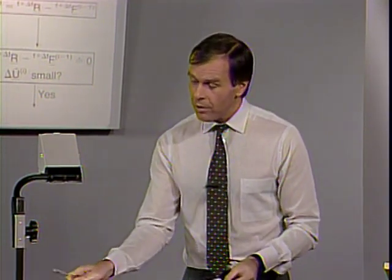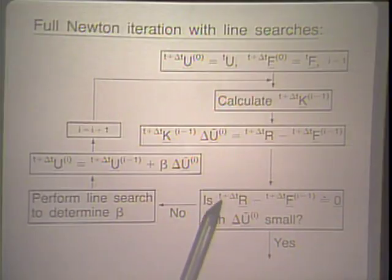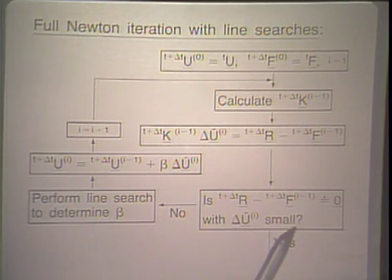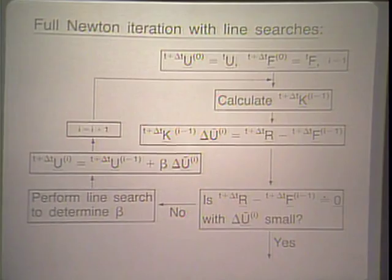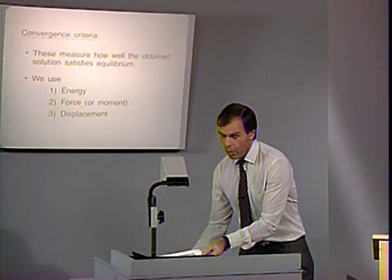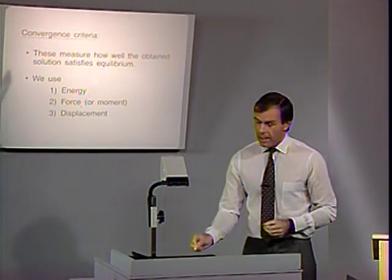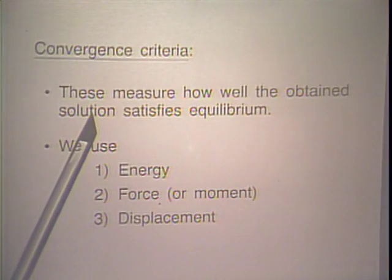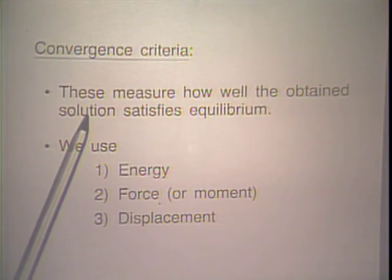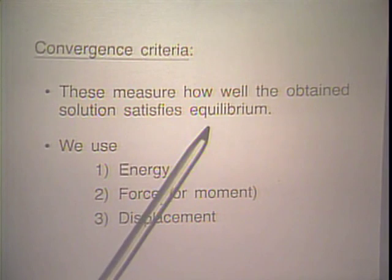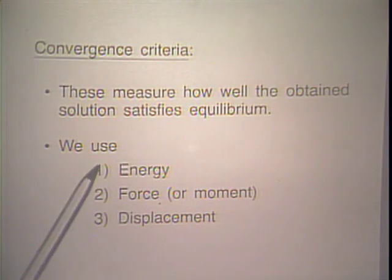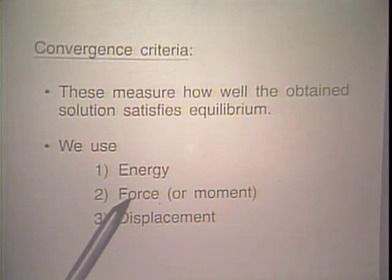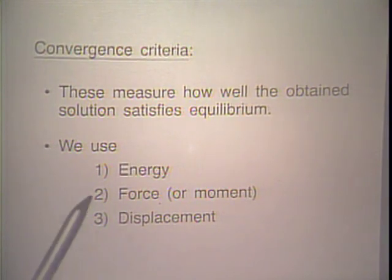Let us now look at how we measure convergence. The measure of convergence should tell us how well we satisfy equilibrium. There are basically three items that can be used: energy, force or moment, and displacement or rotation correspondingly.